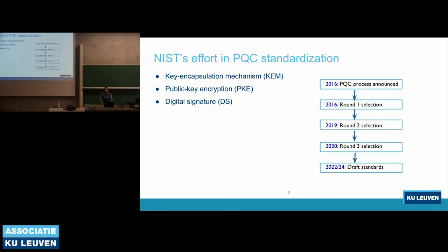Due to the recent development in quantum computers, we now have more than 100-qubit quantum computers. So NIST started a post-quantum cryptographic standardization procedure in 2016, based on three categories: key encapsulation mechanism, public encryption, and digital signature. In 2017, the round one submission was closed, and in 2019, NIST published round two submission candidates. And in 2020, they published all round three candidates and gave some standards in July.